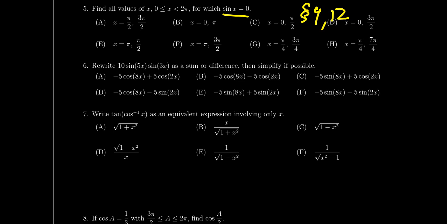Question 6 asks you to convert between products and sums of trigonometric functions. You'll either be given a product and asked to turn it into a sum or difference, or given a sum or difference and asked to turn it into a product. You'll need the product-to-sum or sum-to-product identities, which you do not need to memorize since they'll be on the formula sheet, but you do need to know how to use them. This was covered in lecture 20.